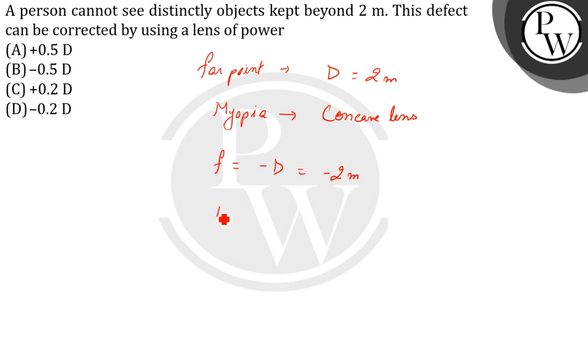This equals 1 by minus 2, which equals minus 0.5 diopter. A concave lens of power 0.5 diopter is required to fix the myopic eye. Option B is our correct answer.